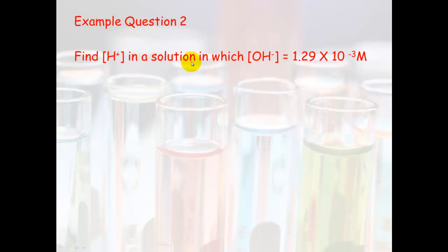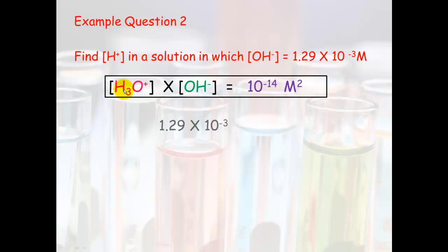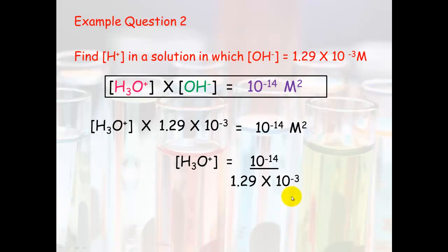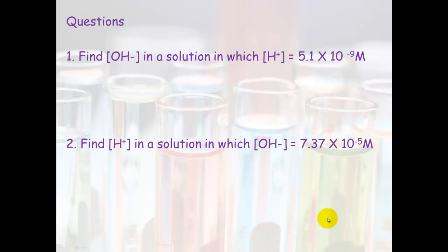A second question is the opposite: find the hydrogen ion concentration in a solution where the hydroxide concentration is 1.29 × 10⁻³ M. Again, we use [H₃O⁺][OH⁻] = 10⁻¹⁴. Plugging in the hydroxide concentration and dividing both sides by 1.29 × 10⁻³ gives us [H₃O⁺] = 10⁻¹⁴ ÷ 1.29 × 10⁻³ = 7.75 × 10⁻¹² M. Pause the video, have a go at the practice questions, and I'll put the answers and worked solutions up.